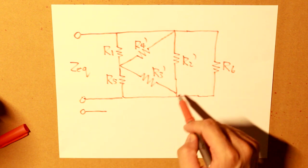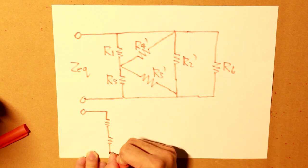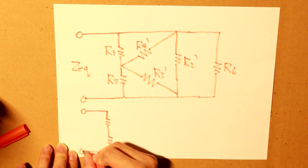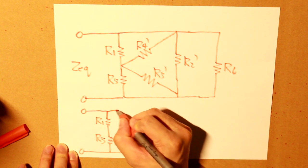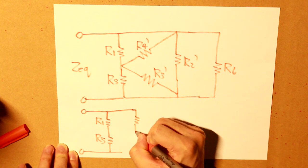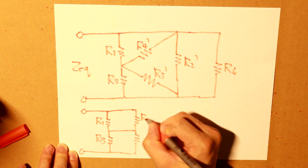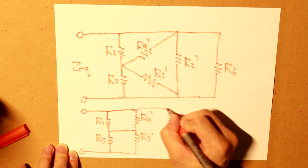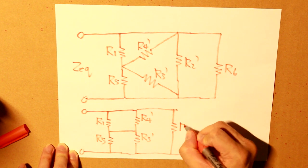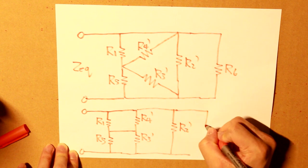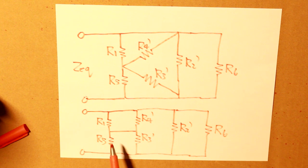So what we can do is that we can kind of reshape this formula a little bit. Sorry, my circuit is a little small here.